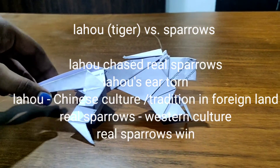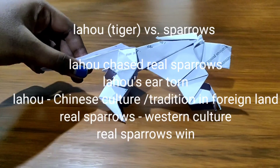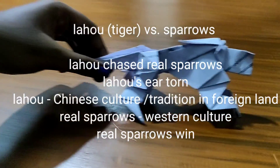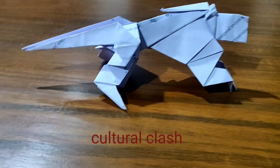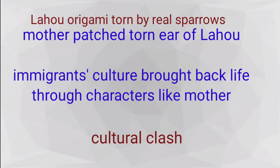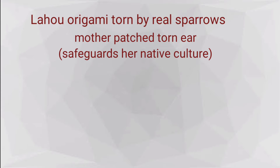We see Jack playing with the laohu origami — the tiger paper menagerie. This Chinese laohu pounced at real sparrows in America and got its ear torn, which denotes cultural clash. Jack's mother patched it with tape, and laohu avoided birds after that. This denotes that after clashing with the western culture, their own culture is getting weakened in the foreign land.